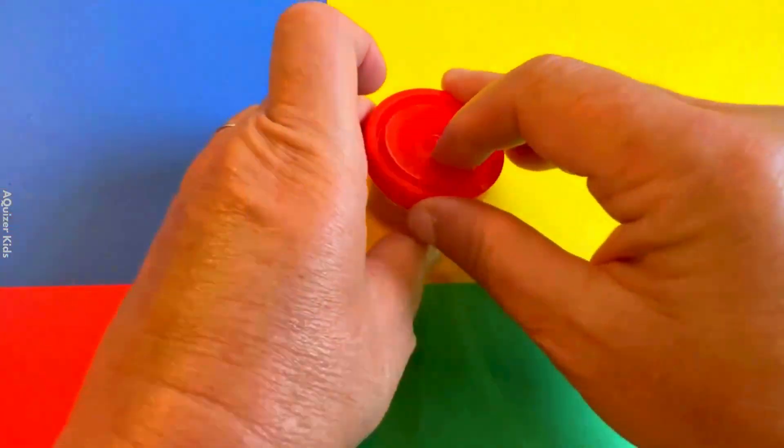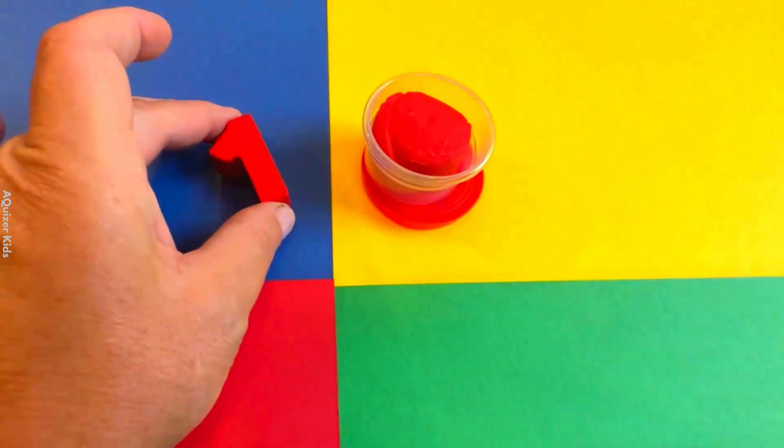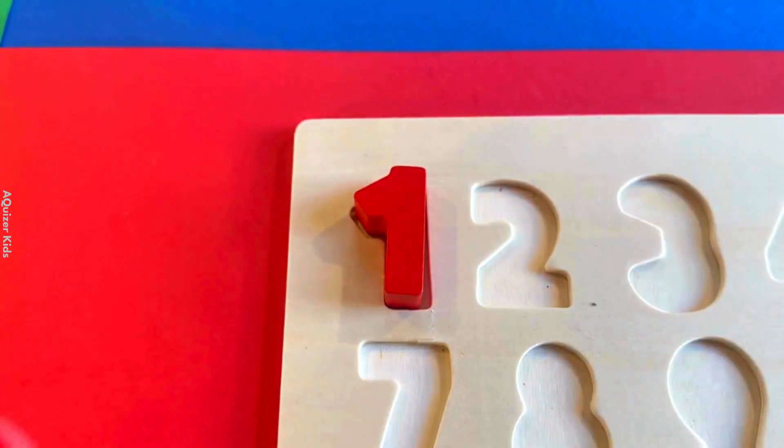There is a red box, but what is inside? Inside is red clay, so here we have the number one. Let's put the number one in its place in the puzzle.